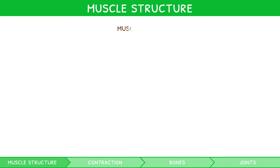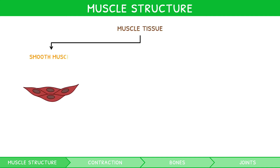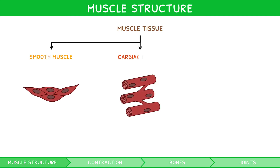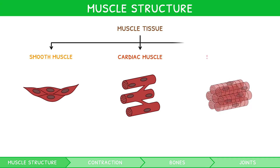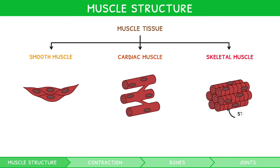Muscle tissue can be one of three types: smooth, cardiac, or skeletal. When examined under a microscope, skeletal muscle has visible lines, and so it is known as striated muscle. It forms the focus of this IB Biology topic.